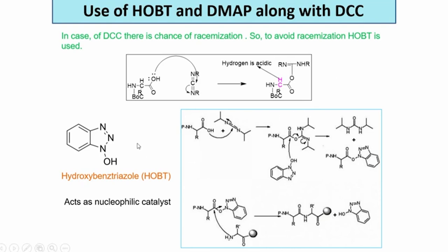But if you have hydroxybenzotriazole, after the formation of the intermediate - this was shown actually with diisopropyl carbodiimide because there are isopropyl groups in this mechanism - the hydroxybenzotriazole comes, kicks this out as the urea, and forms another new intermediate. This is also very labile, so immediately the amine comes and attacks this carbon, and you get back the hydroxybenzotriazole. That is what was written on the board.